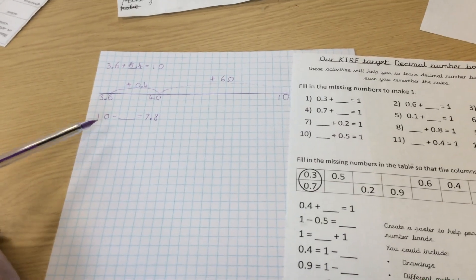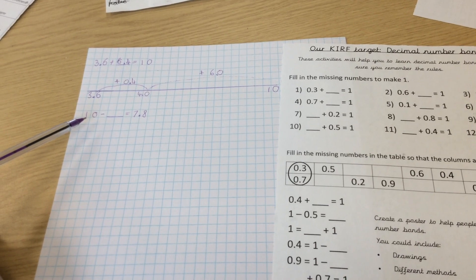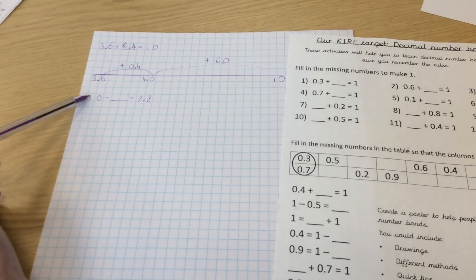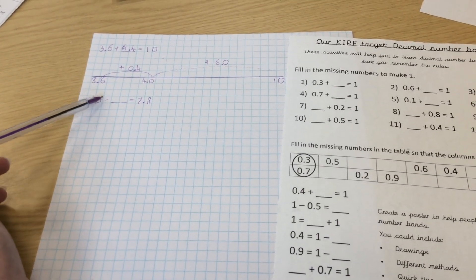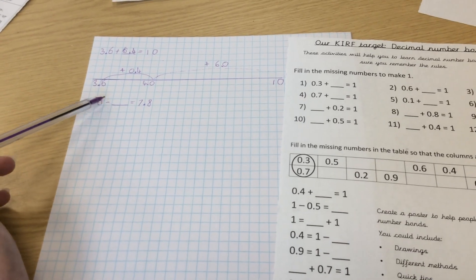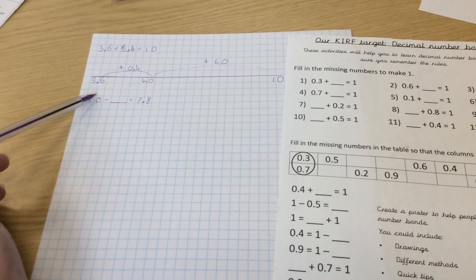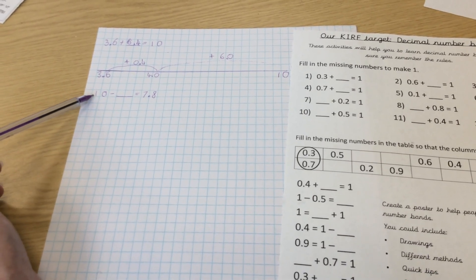Sometimes your questions might be written using an inverse. This is where we start with our largest number, so that would be 10 because this is our total that we are always aiming to get to, so we start at 10 minus our missing number equals 7.8.